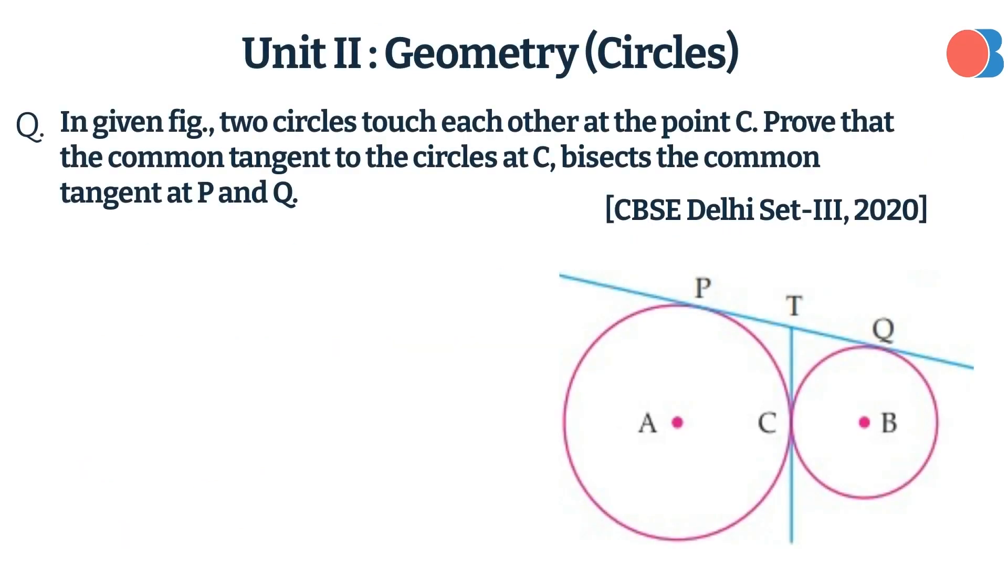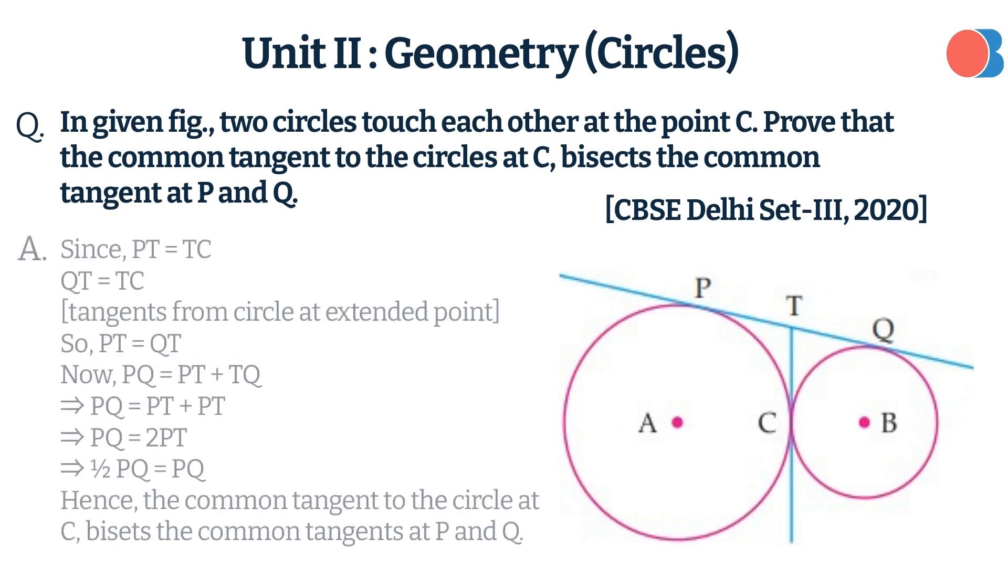In the given figure, two circles touch each other at point C. Prove that the common tangent to the circles at C bisects the common tangent at P and Q. Here is the answer.